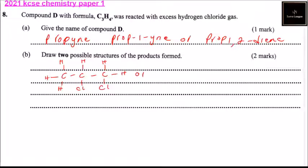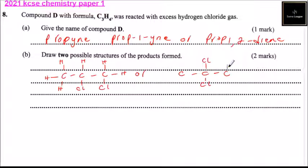Or you can still write the structure like this: we have carbon, carbon, carbon. Then we can have chlorine on one carbon and the other positions filled with hydrogen atoms. So this is the first structure — 1,2-dichloropropane.